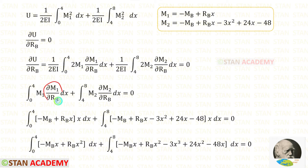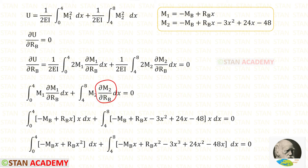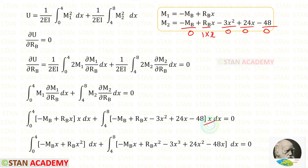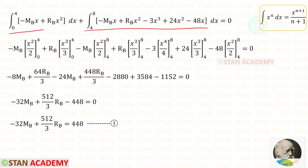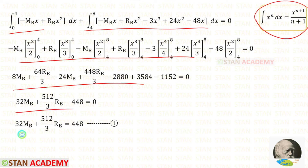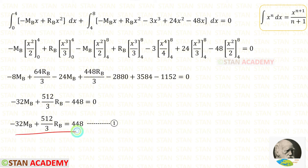Partially differentiating M1 with respect to Rb: there is no Rb term in the constant part, so for Rb it gives 1, and 1 times x gives x. We then multiply the terms and perform integration. After integrating and simplifying, we get equation number 1.